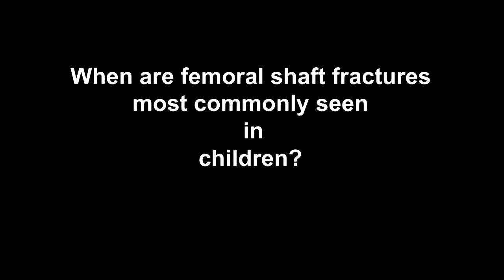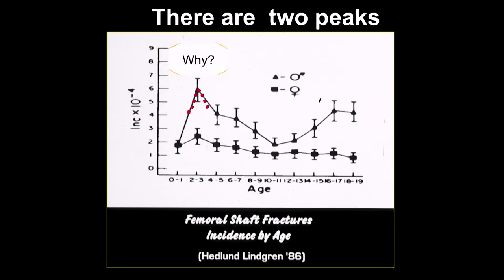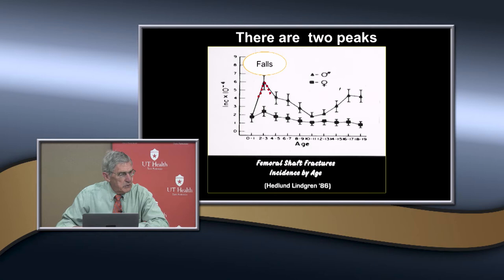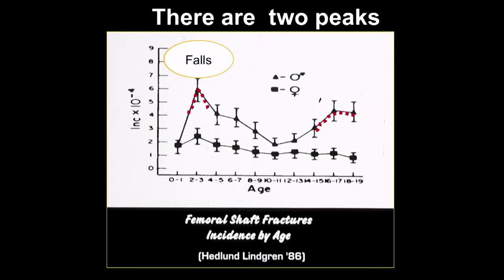Femoral shaft fractures are different in children. When do you expect to see them? There's one peak early, around ages two to five—kids are just starting to walk, don't have a lot of balance mechanisms, and injuries are usually due to falls with a twisting mechanism, which is why we see a lot of spiral fractures in this age group. Then there's a later peak from high-energy mechanisms—usually major trauma like being hit by a car, sports injuries, or car wrecks.